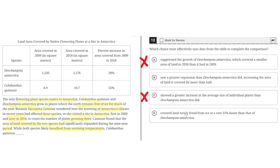Option D says Columbanthus quercensis covered land newly freed from ice at a rate 55% faster than that of Descampsia Antarctica. This is incorrect, because the 55% number is the percent increase in area covered from 2009 to 2018, not a comparison to Descampsia Antarctica's own percent increase. So D is incorrect, and the correct answer is B.